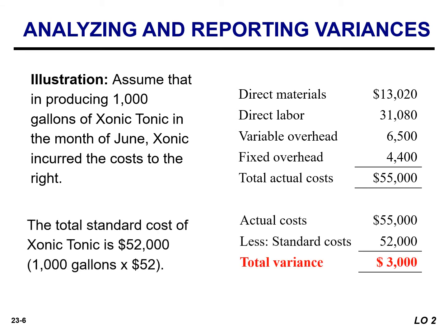The total standard cost is calculated by multiplying the units produced — in this illustration, 1,000 gallons — by the standard cost per unit of $52, giving a total standard cost of $52,000. The total variance is $3,000, which is the difference between actual and standard cost, and that is unfavorable because actual cost exceeds standard cost.